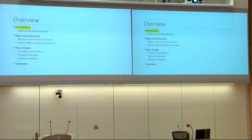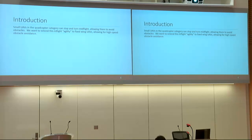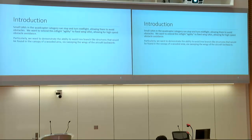Starting with an introduction: small UAVs in the quadcopter category can stop and turn on a dime to avoid obstacles. People fly these drones around neighborhoods and parks and they can avoid almost anything. We want to extend this agility to fixed-wing UAVs, allowing them to maneuver in spaces they previously couldn't, by retracting the wings of the airplane backwards. In particular, we want to avoid obstacles reminiscent of tree branch-like structures found while flying in a wooded area.